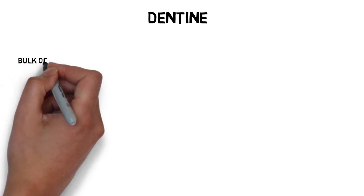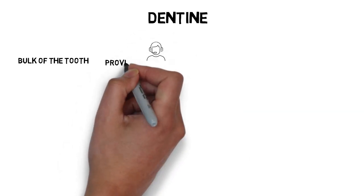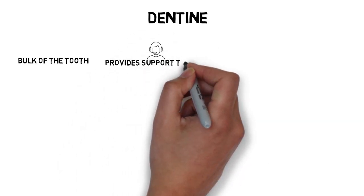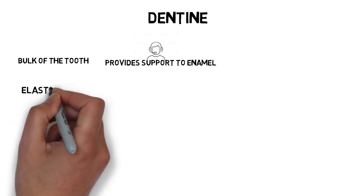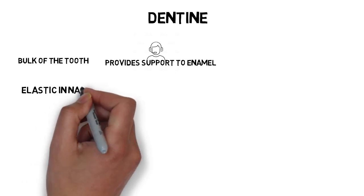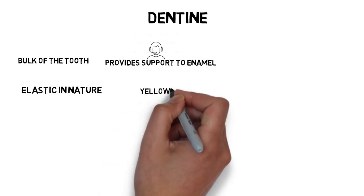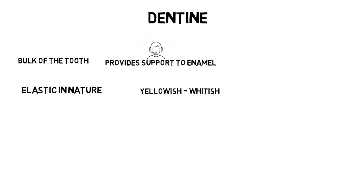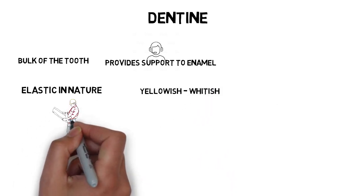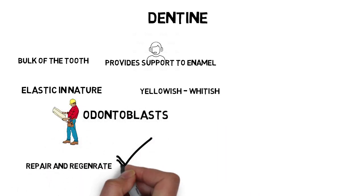Dentine is also a mineralized structure. It makes up the bulk of our tooth and provides support to the brittle enamel — without dentine, enamel would just chip off. Unlike enamel, dentine is elastic in nature, which is why it provides support to the enamel. It is slightly whitish to yellowish in color — mostly yellowish, but it can vary from person to person. This is the reason why our teeth appear either yellow or white, as the color of dentine is refracted through the enamel. The formative cells of dentine are known as odontoblasts.